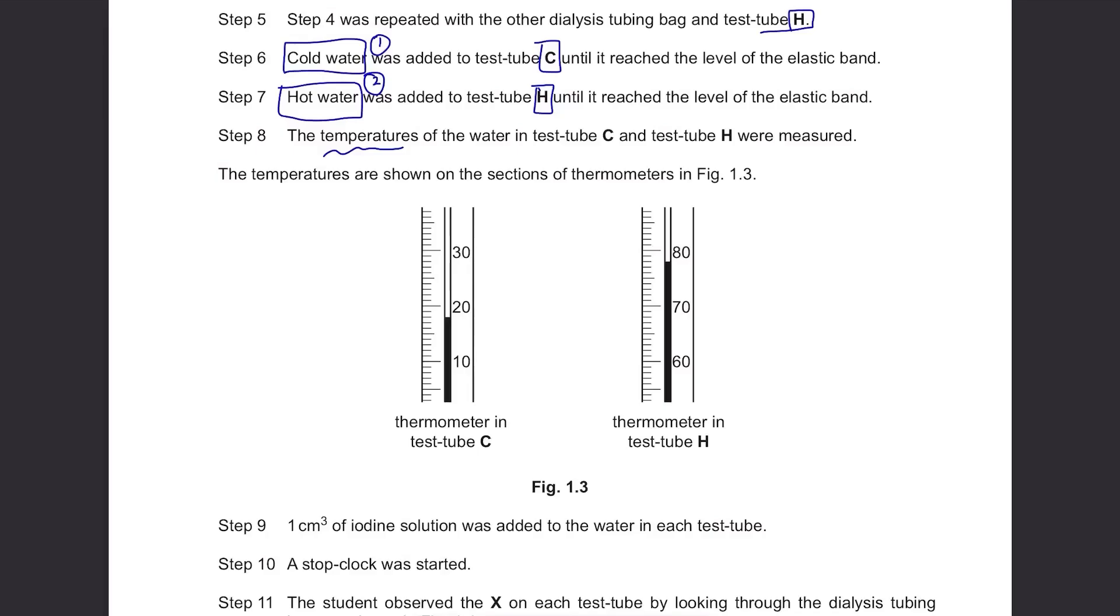Step 8: The temperatures of the water in test tube C and test tube H were measured. The temperatures are shown on the sections of thermometers in Figure 1.3. They are 18 degrees and 78 degrees. Step 9: One cm cubed of iodine solution was added to the water in each test tube. Step 10: A stop clock was started.